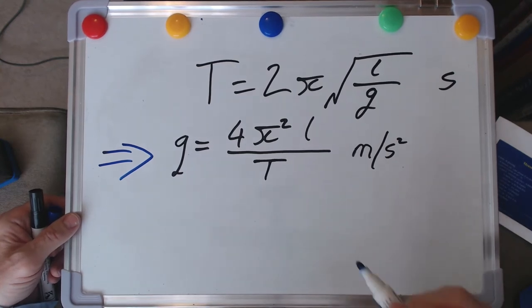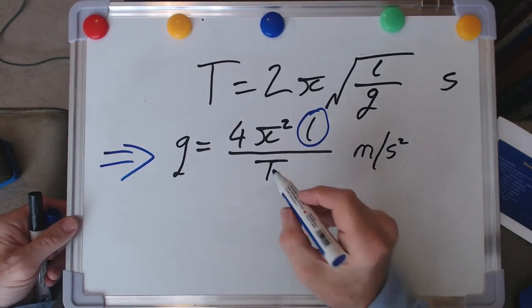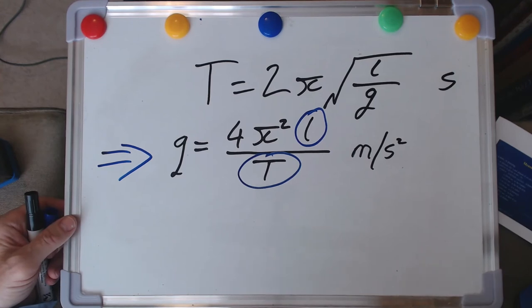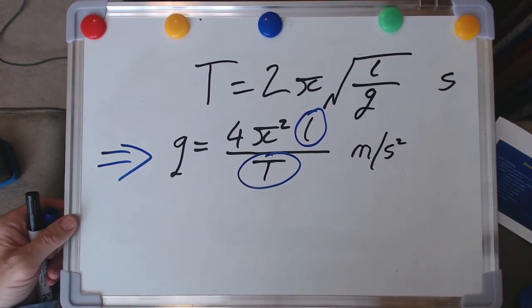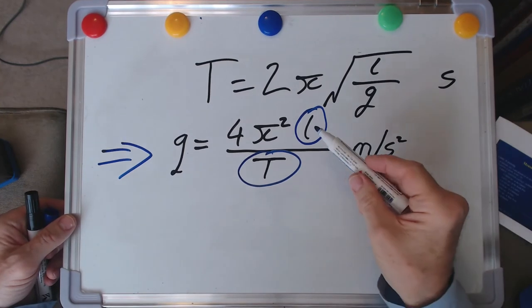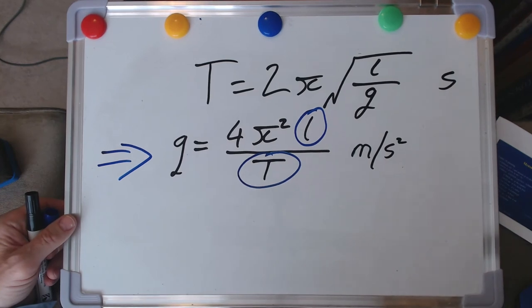All I need to do is carefully measure the length of my pendulum, carefully measure the time of each period of oscillation of our pendulum. And I can put those numbers in to this equation and work out a number for g.